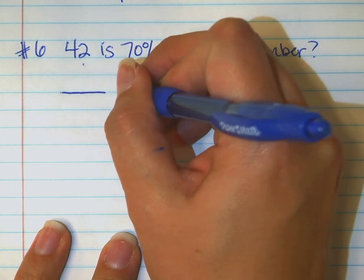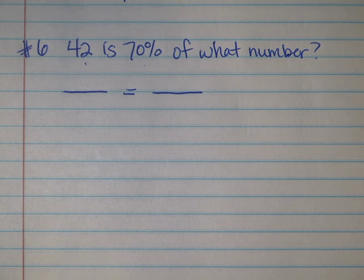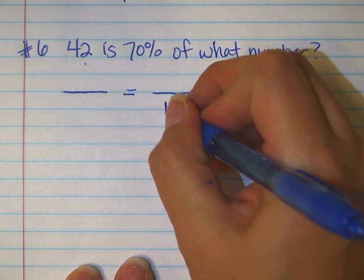We already know that I'm going to be setting up a proportion and I already know where the 100 belongs. Bottom left.